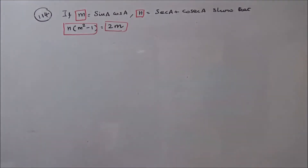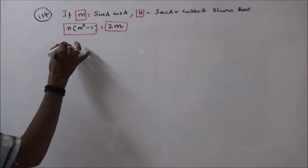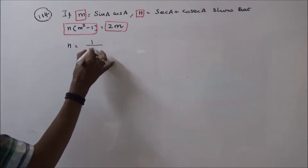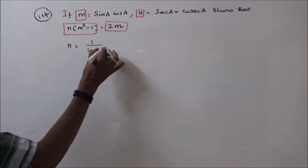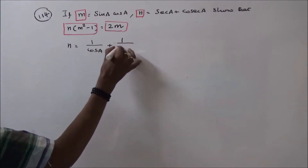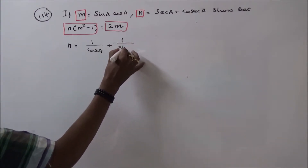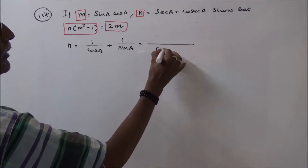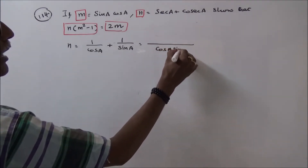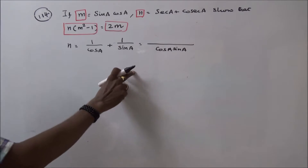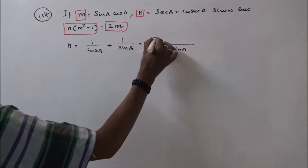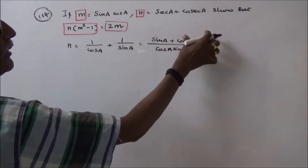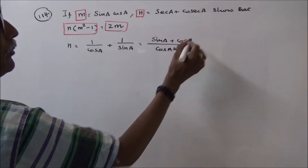First I will take n. N is equal to secant a. Secant a is 1 by cos a, and 1 by sin a is cosecant a. So this will become sin a plus cos a divided by cos a into sin a. This is the term n.